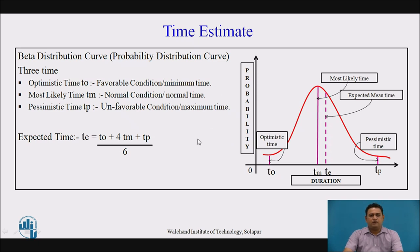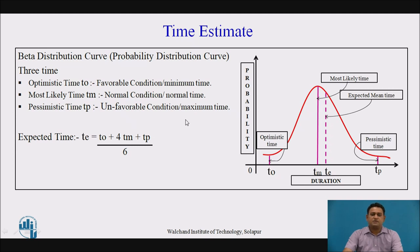The most likely time is the time when the particular condition is a normal one, and it is the normal time required for the completion of the activity. The pessimistic time is the time when the condition is unfavorable, and it is the maximum time required for the completion of the activity. With the help of all three time estimates, we define the expected time of each activity, and with the expected time, we define the project duration.